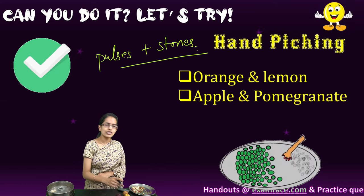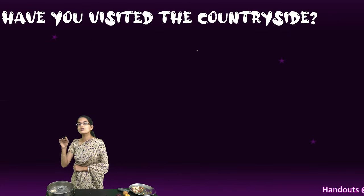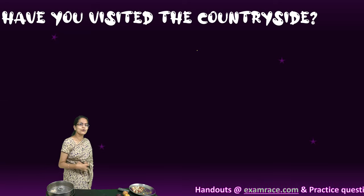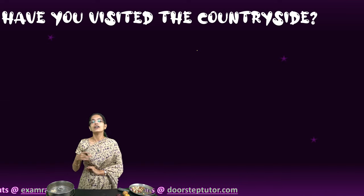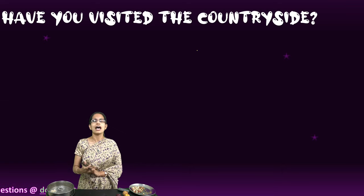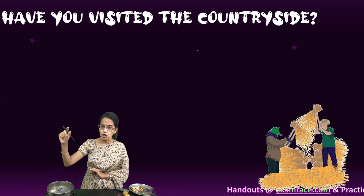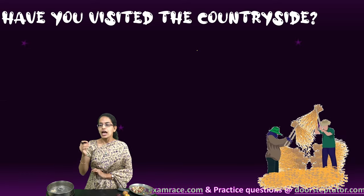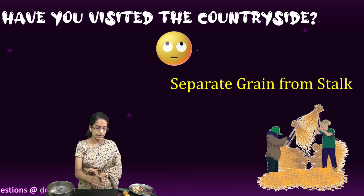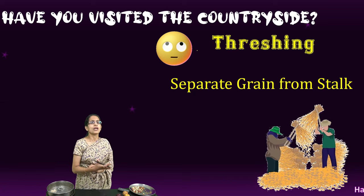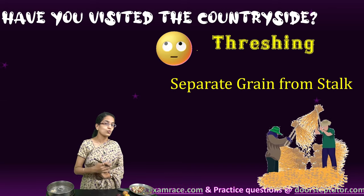Moving on, we have another method that you'd commonly observe in the countryside or agricultural fields. When grains are separated from the stalks, this process is known as threshing. It is usually done during the harvesting months, which vary for each crop. Threshing methods are commonly seen in rural and agricultural regions.